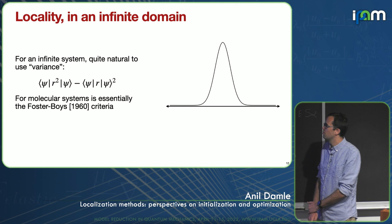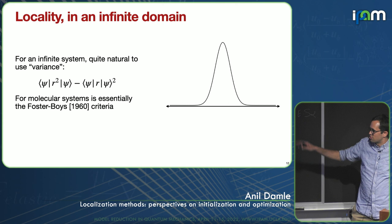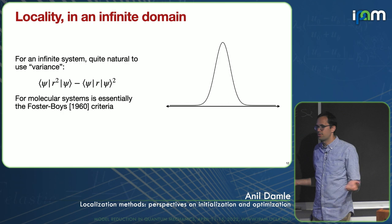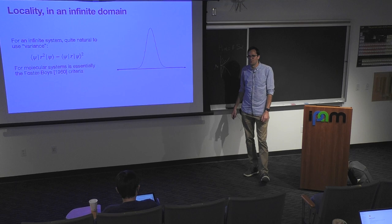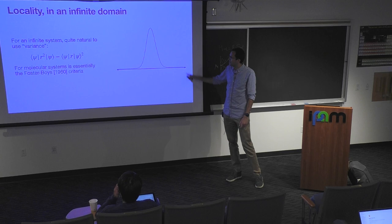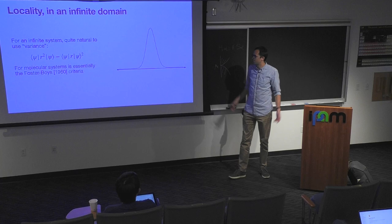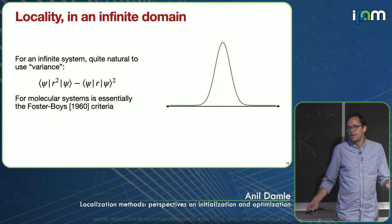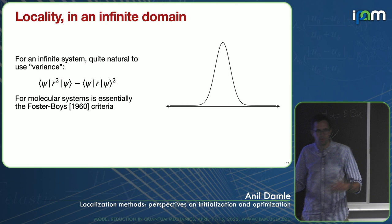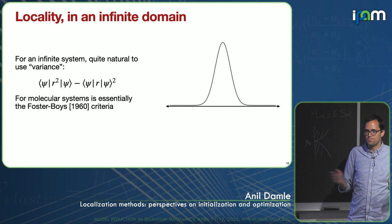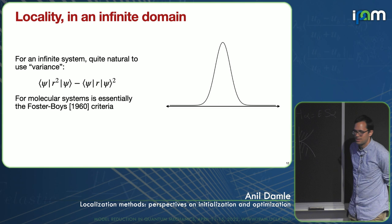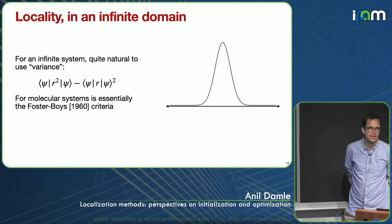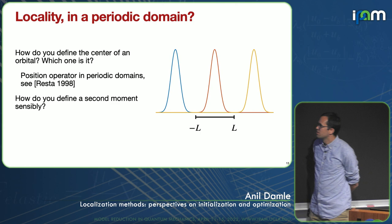In an infinite system, it's natural to define locality as variance. There's statistics in the title of the long program, so here's a bit: the variance of a function is a reasonable measure of its locality. In the quantum chemistry context, this corresponds to the Foster-Boys criteria. I look at the second moment and the squared first moment and take the difference — computing the variance of each function. In an infinite domain this is perfectly sensible, but we often work in periodic or condensed-phase systems, and as soon as you do that, things get more complicated.